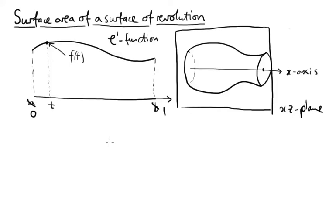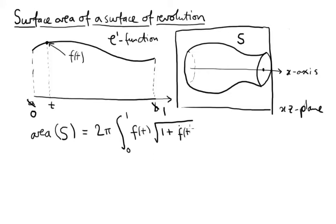So what's the formula I'm going to prove for the surface area? Let's give it a name, say s. It's not a 5, it's an s. The area of s equals 2π times the integral from 0 to 1 of the function f times the square root of 1 plus f dot squared. So that's the derivative with respect to t squared dt.